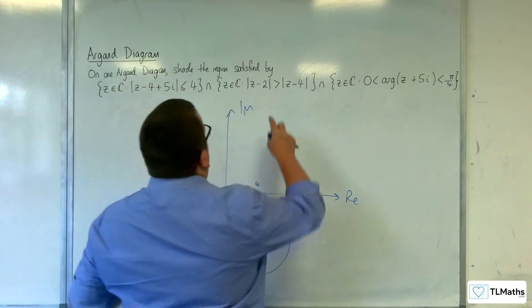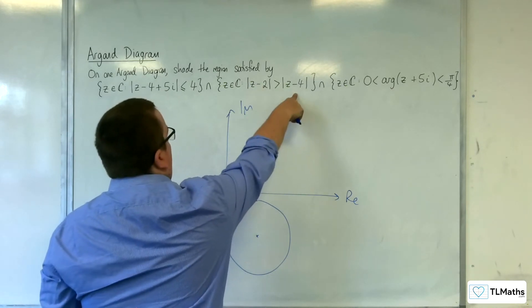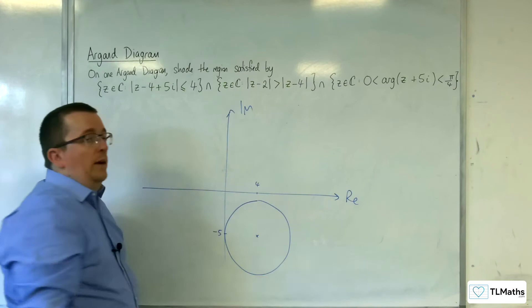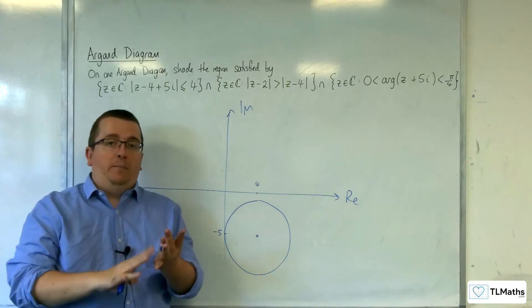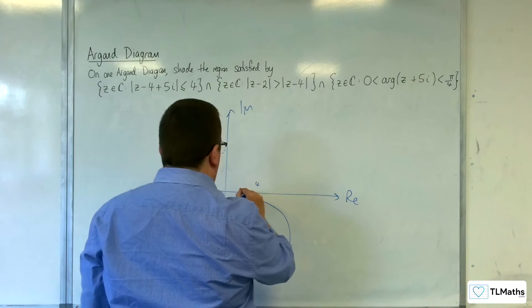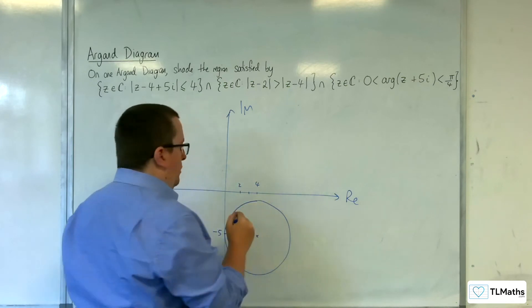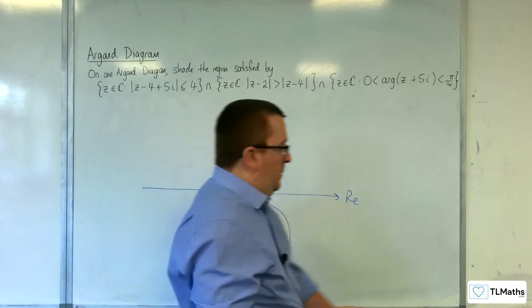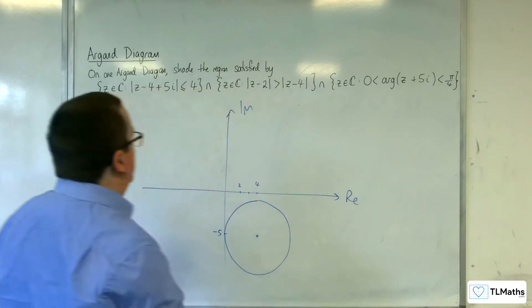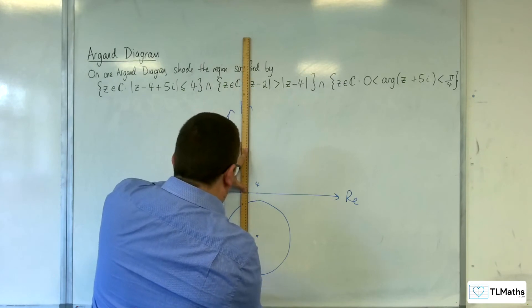Second bit, z modulus of z take away 2 is greater than modulus of z take away 4. Now, we know that that is a perpendicular bisector. Now, for 2 and 4, that would be 2 here and 4. So, the midpoint would be 3. So, the perpendicular bisector is just going to be a vertical line going through 3.